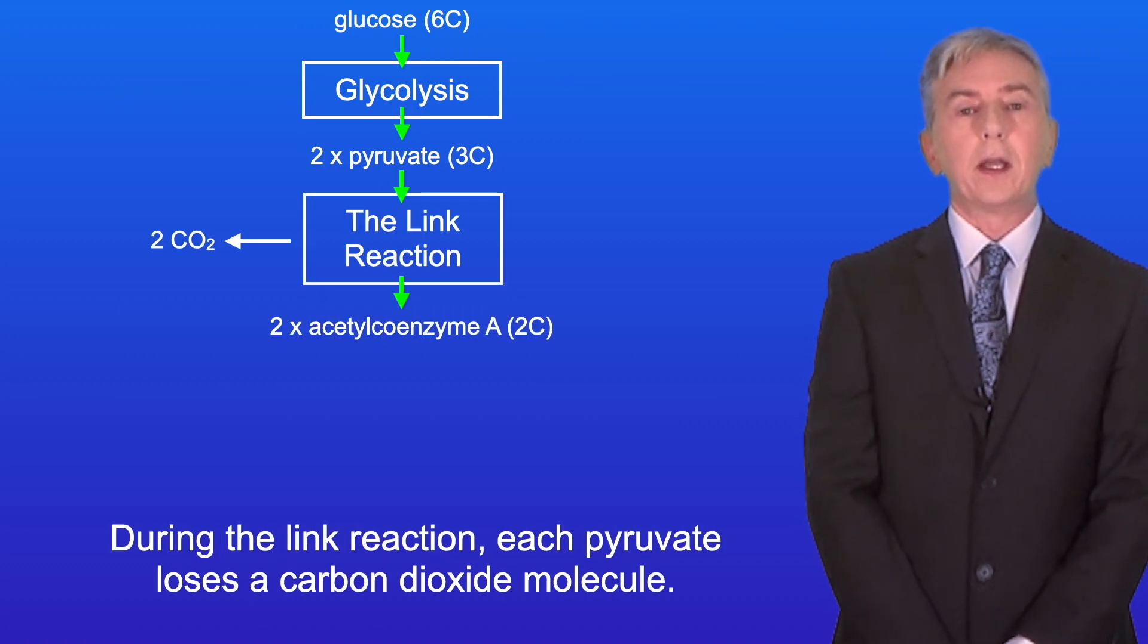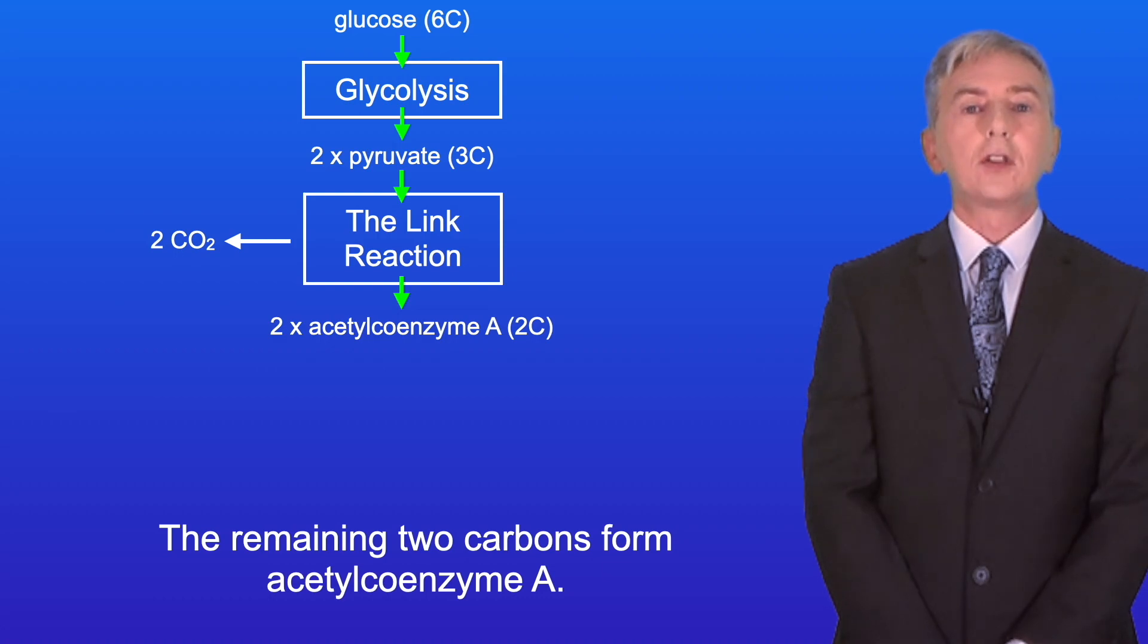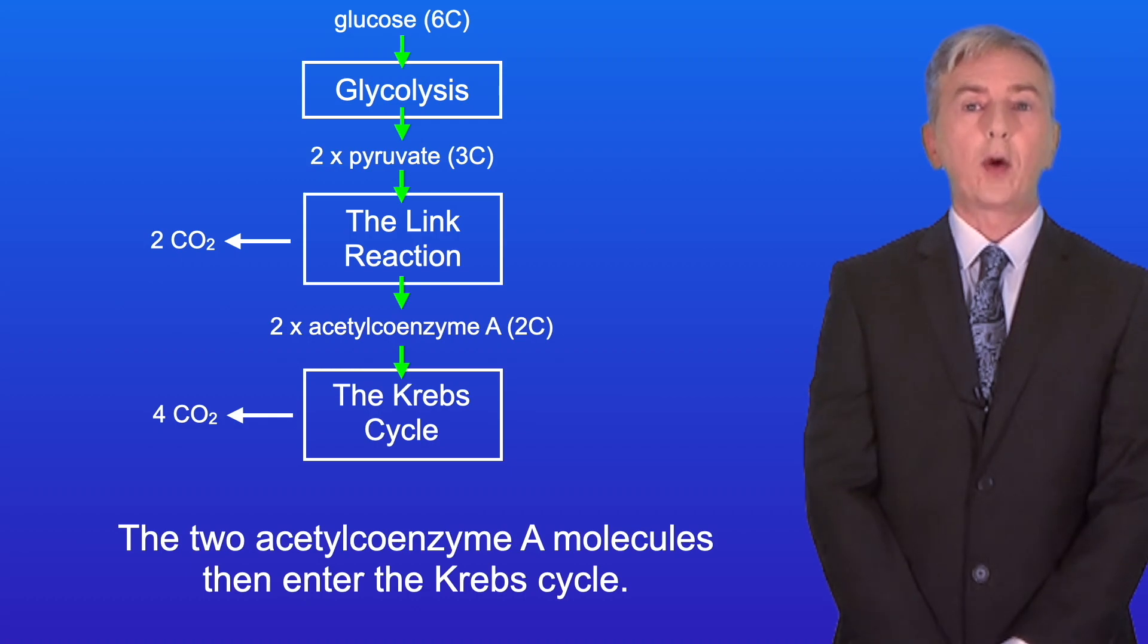During the link reaction, each pyruvate loses a carbon dioxide molecule and the remaining two carbons form acetyl coenzyme A. The two acetyl coenzyme A molecules then enter the Krebs cycle.